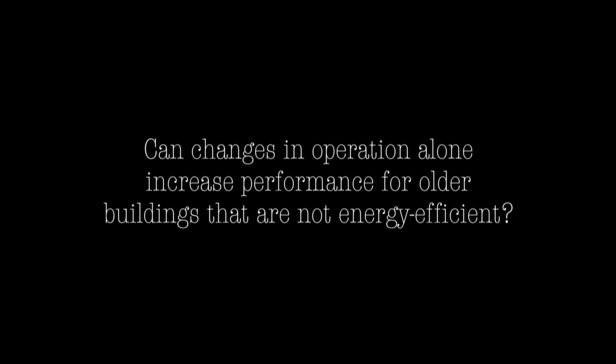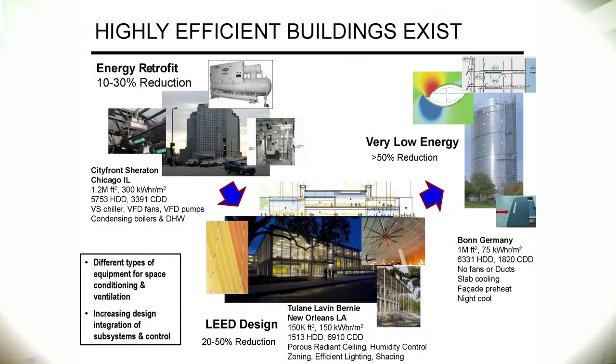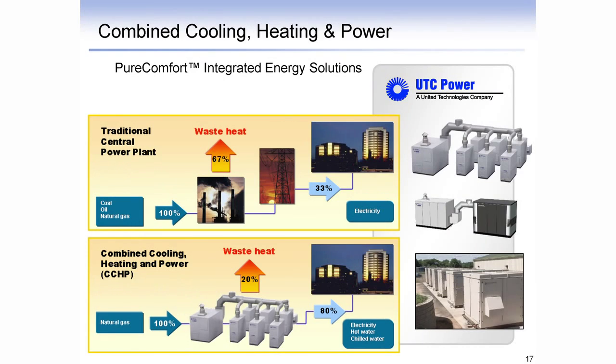Most of the energy savings are to be found in retrofits. In almost all the different ways you would attack existing buildings, controls matter a great deal. As you replace lighting, windows, or HVAC equipment with more efficient components, getting those components to interact correctly — the sharing of information — really is the domain of control. So control is essential, but so is getting the right kinds of components in the building.